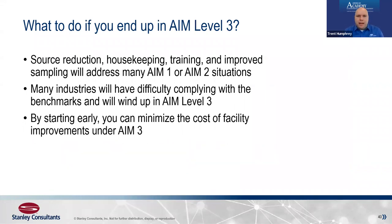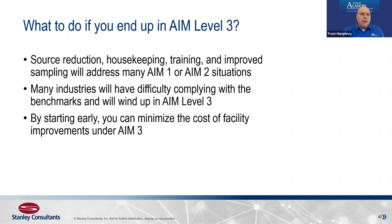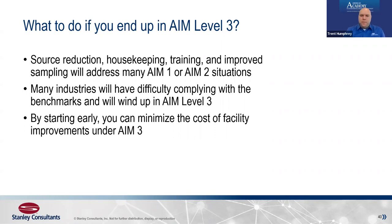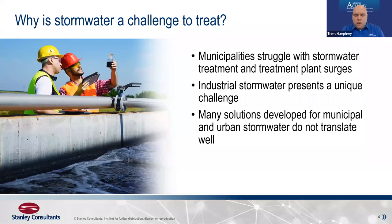Putting it all together: you do your internal sampling, sample your outfalls, and figure out your compliance position relative to your SIC code benchmarks. If you're at Level 1, review housekeeping, conduct training, and update your SWPPP. If you're heading toward Level 3, use internal sampling data to identify whether it's a stockpile, roof discharge, or another specific source causing the problem. That data will help you target your solutions and minimize costs at the facility.